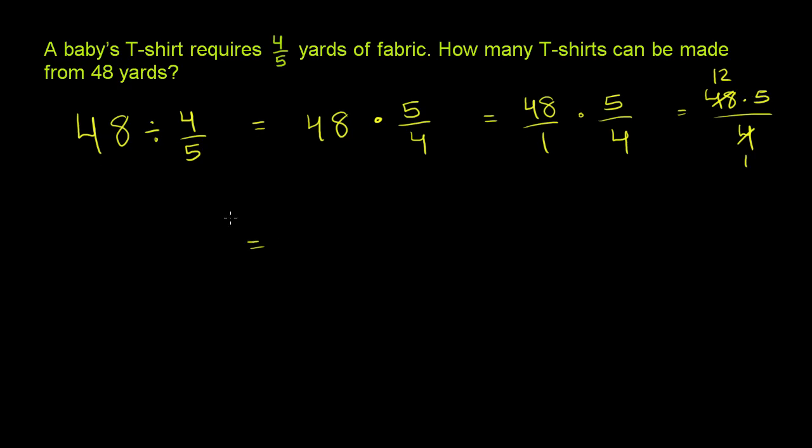Which is equal to 60 over 1, which is the exact same thing as 60. So you can actually make 60 children's or baby's t-shirts from 48 yards if each of them use 4 fifths of a yard.